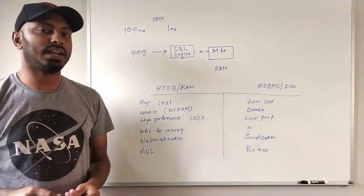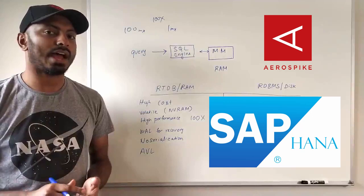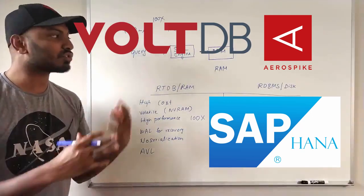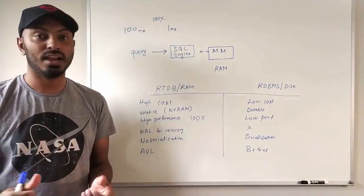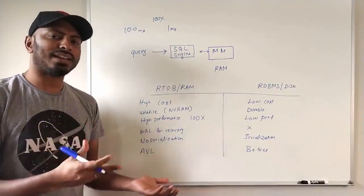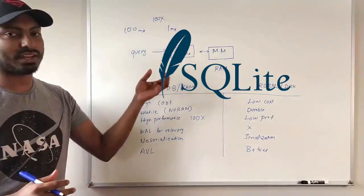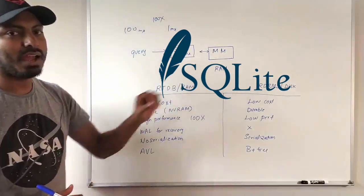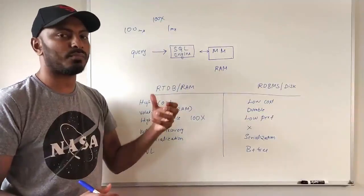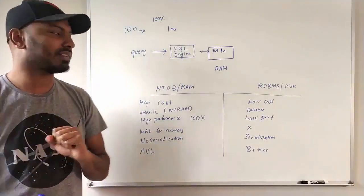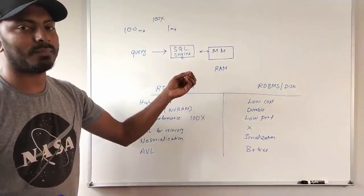There are many different real-time databases available: Aerospike, HANA DB from SAP, and many other variants. Redis, Memcached, and SQLite also fall into the same category. Redis and Memcached don't have SQL support — they are mostly key-value stores — but underlying they share a lot of the same characteristics.